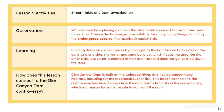You will use the discussion to create the Lesson 5 Summary Chart. From the discussion, students should understand that the Glen Canyon Dam is built on the Colorado River and has damaged many habitats, including the razorback suckerfish. This lesson connects to the controversy because it shows how the dam harms habitats in the canyon area, which is a reason some people do not want the dam.